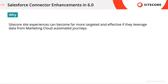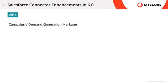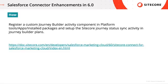With this enhancement, Sitecore site experiences can become far more targeted and effective if they leverage data from marketing cloud automated journeys. This feature was made for campaign and demand generation marketers in mind. The way to leverage it is by registering a custom journey builder activity component in platform tools, under apps, under installed packages in Salesforce Marketing Cloud, and set up the Sitecore journey status sync activity in your journey builder plans.